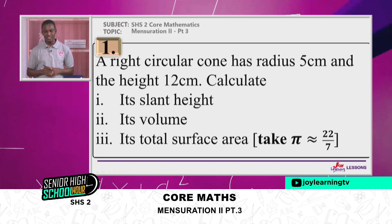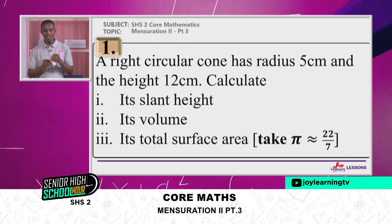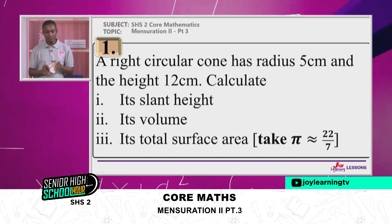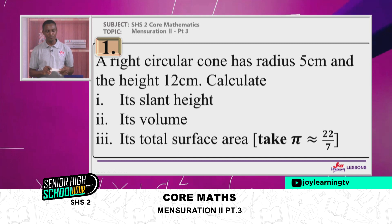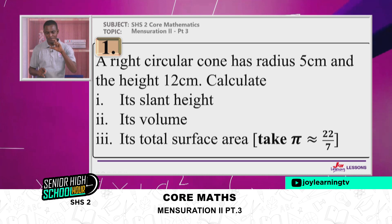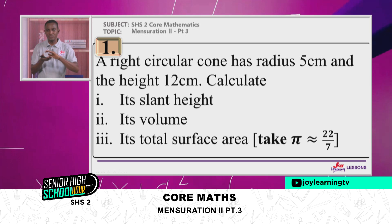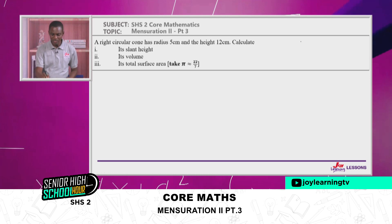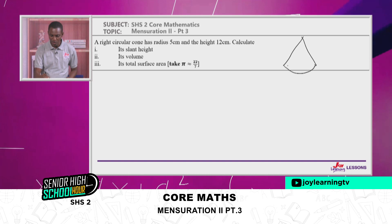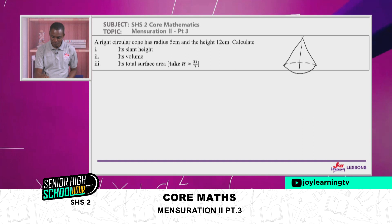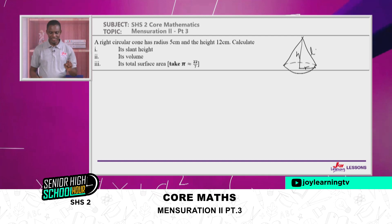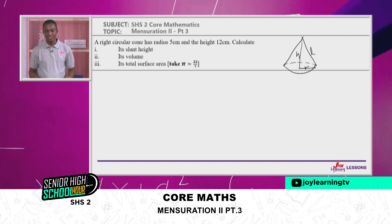A right cone has radius 5 centimeters and height 12 centimeters. We want to find the slant height, the volume, and the total surface area. A right cone simply means a perfect cone with an exact circular base and equal slant heights all around. Let me do a sketch of the cone. The radius R is 5 cm, the height H is 12 cm, and we need to find the slant height L. The height and radius meet at a right angle, so we can use Pythagoras' theorem.